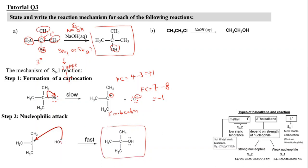The oxygen initially has six lone pair electrons and carries a partial negative charge. When two electrons are transferred, the lone pairs are diminished to four lone pair electrons. The oxygen in the OH group will have a formal charge of six valence electrons minus two lone pairs minus four bonding electrons, resulting in a neutral charge — no positive or negative charge.